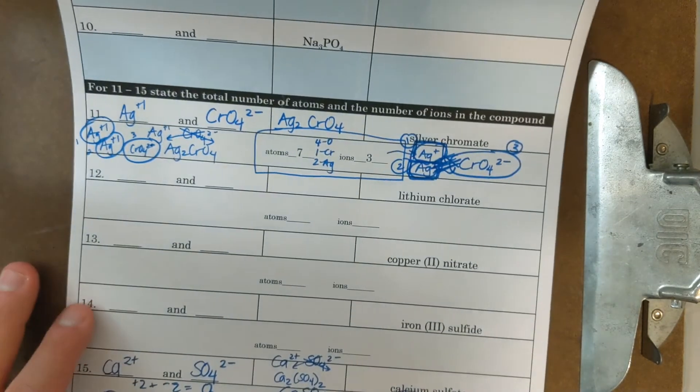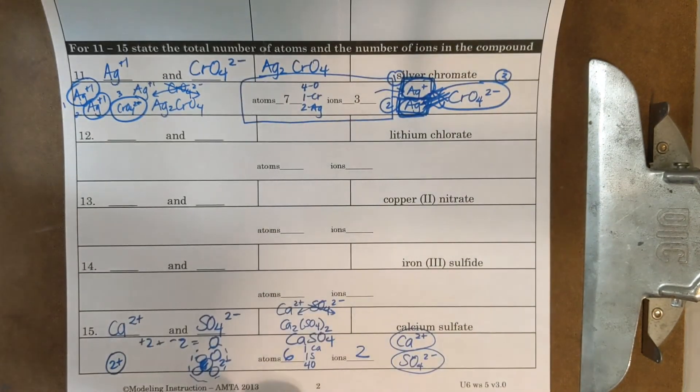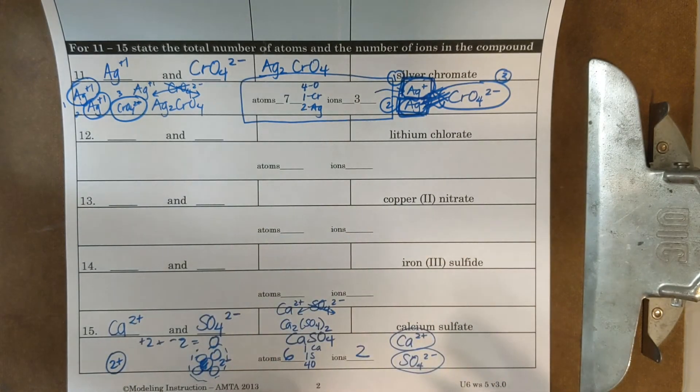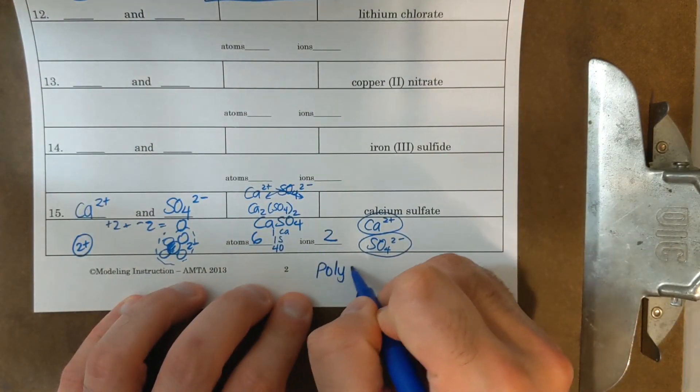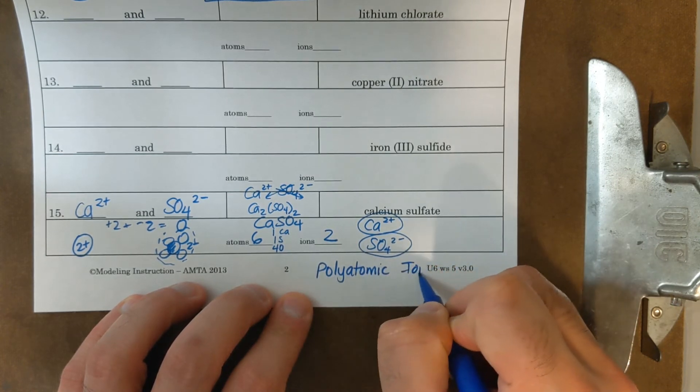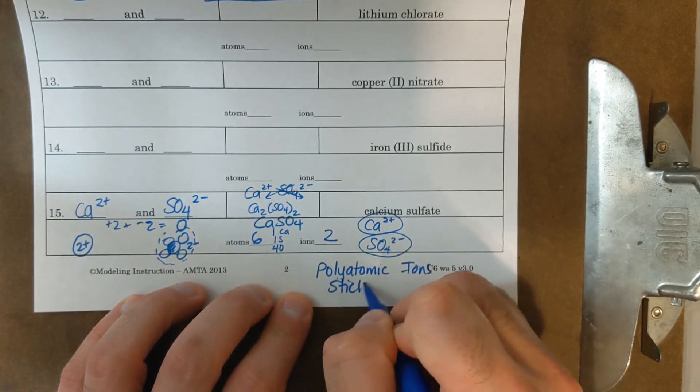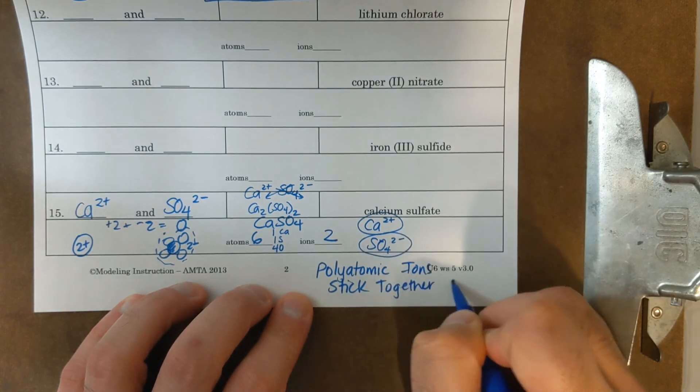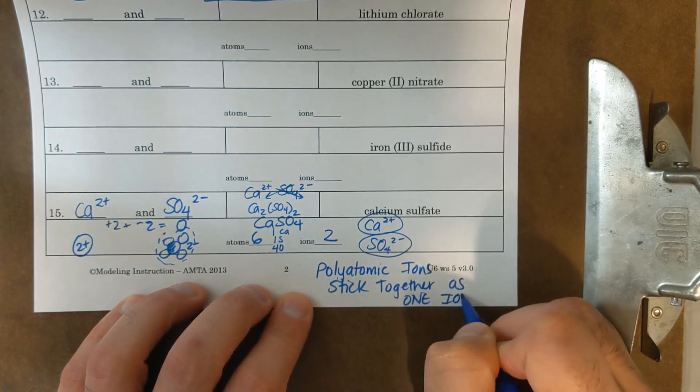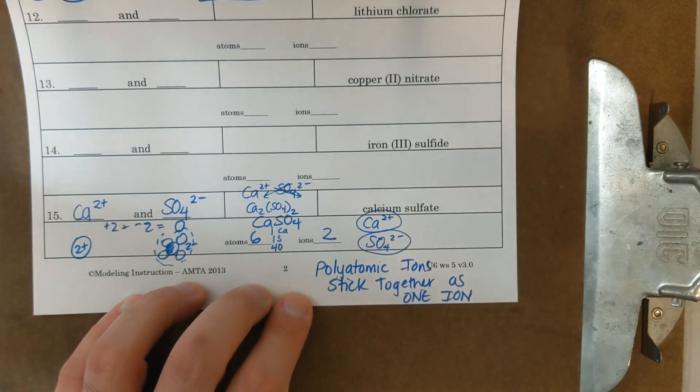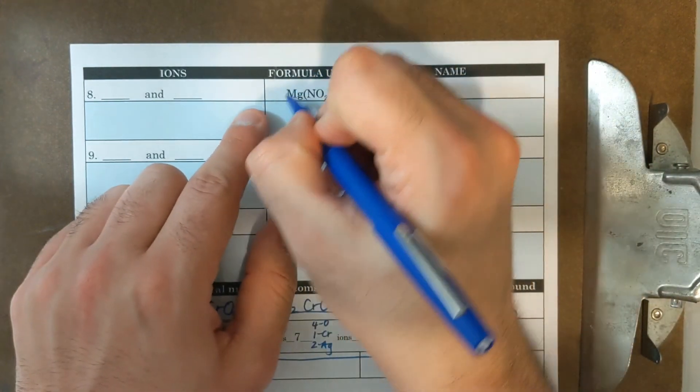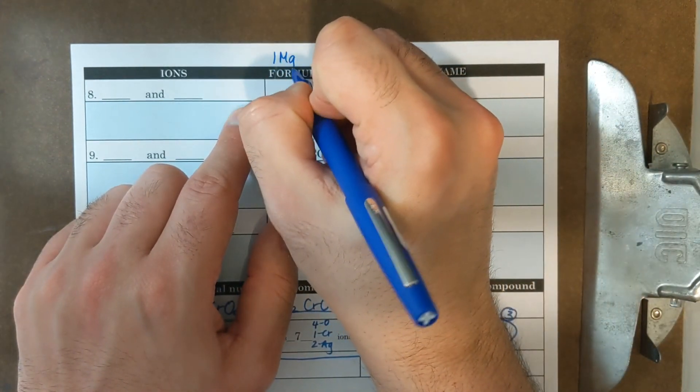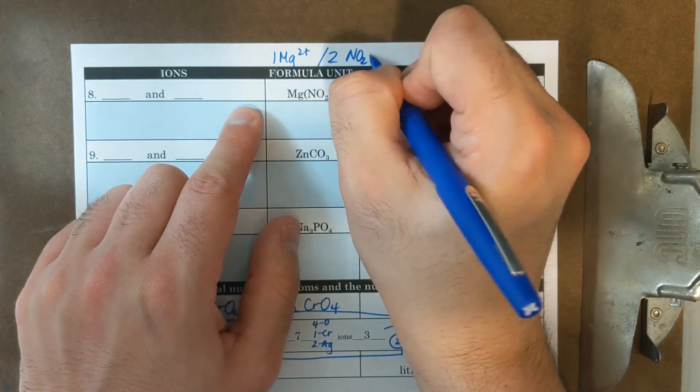So for questions 12 through 14, you're going to do the same thing now where I figure out what the each individual ions are and write the formula. And then I should be able to count ions and atoms. Don't forget that polyatomic ions stick together. Polyatomic ions stick together as one ion. I could have multiple polyatomic ions. If you look at number eight, there are two NO2s.